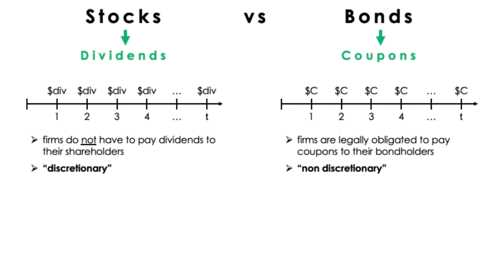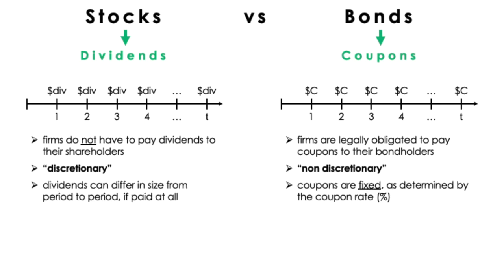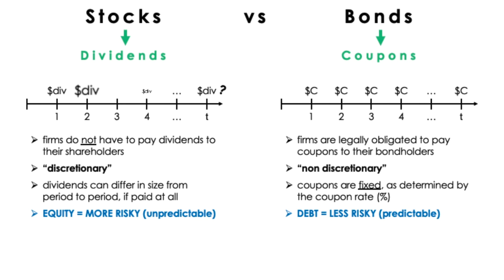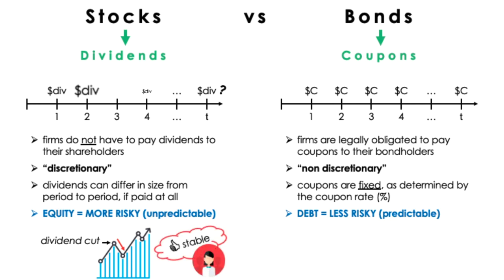Another difference between stocks and bonds is that, when firms do pay dividends, they are not necessarily the same amount each time, so stocks are not fixed the way bonds are. Because shareholders cannot anticipate when they will receive dividends and how much the dividends will be worth, owning equity is usually riskier than owning debt. In general, since investors are risk-averse, they prefer a dividend that is growing at a sustainable rate. Dividend cuts empirically have resulted in a decrease in the price of a stock. Thus, it is better for firms to pay dividends at a steady rate that they can maintain, than to swing back and forth between paying large dividends one quarter and no dividends the next.